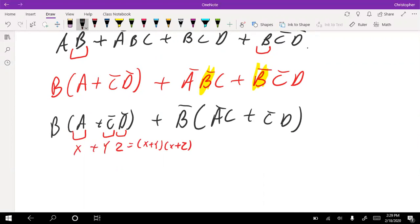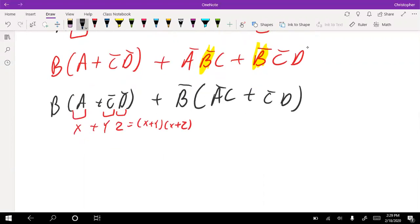So let's use that information. Now I have B times A plus C bar times A plus D bar, plus the other term exactly the same.